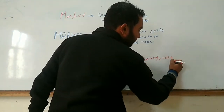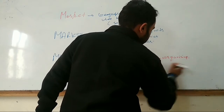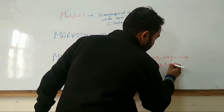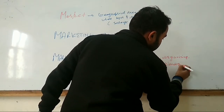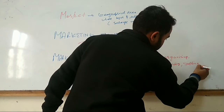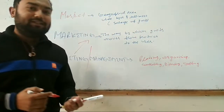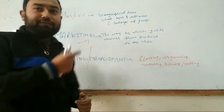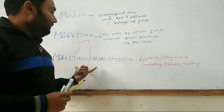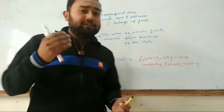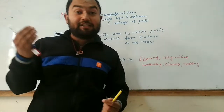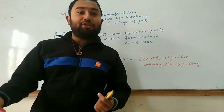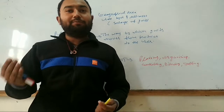...organizing, controlling, directing, and staffing. These are the functions of management. So the combined meaning of both is: marketing management means the department or division of an organization which is concerned with planning, organizing, controlling, and directing the functions of marketing. That is known as marketing management.